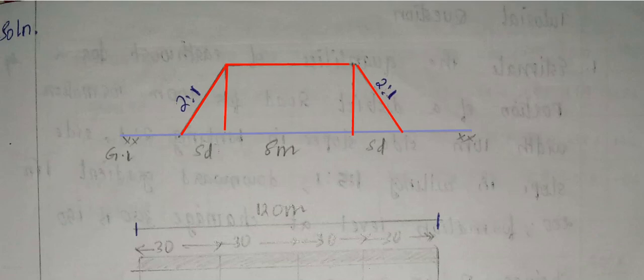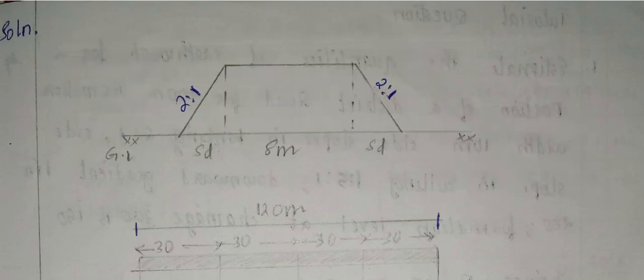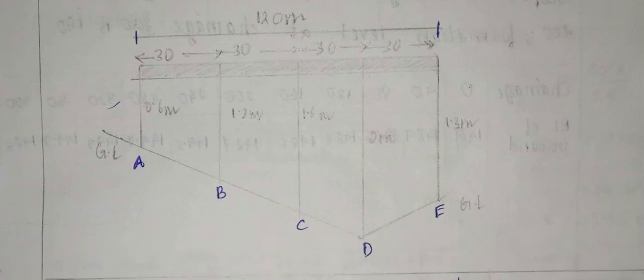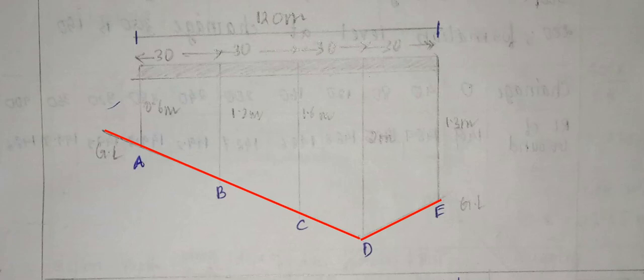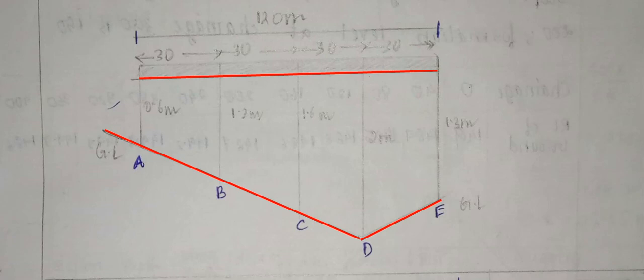The embankment is 8 meters wide at the crest and 120 meters long in total length. Along the road, the ground level differs from the road formation level. The road is constructed above the ground level, and the difference between the road level and ground level is the central height at each station.